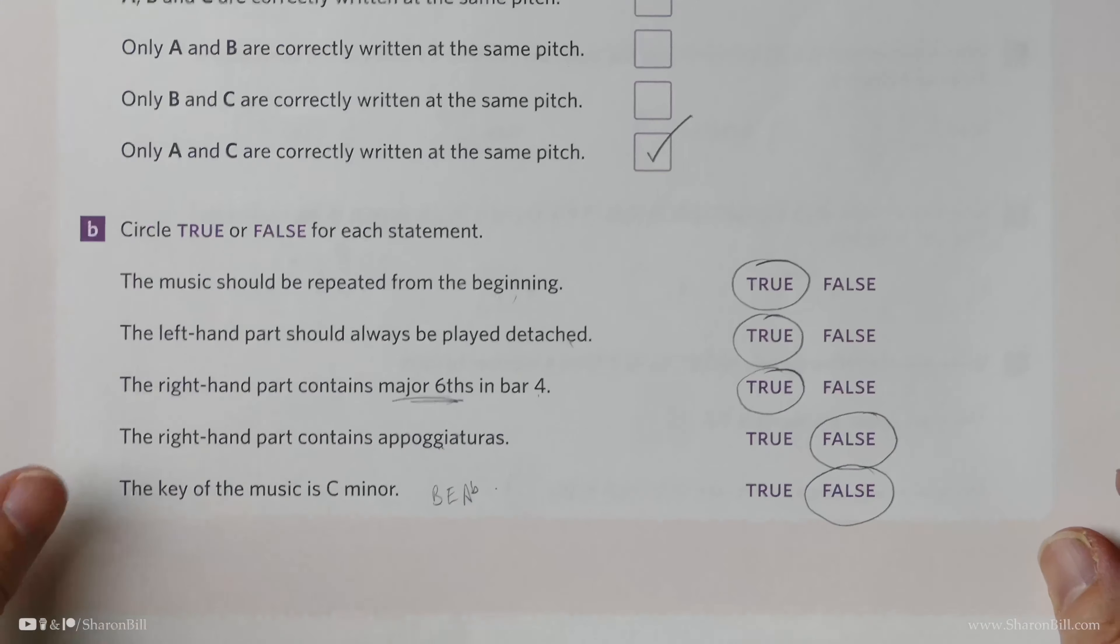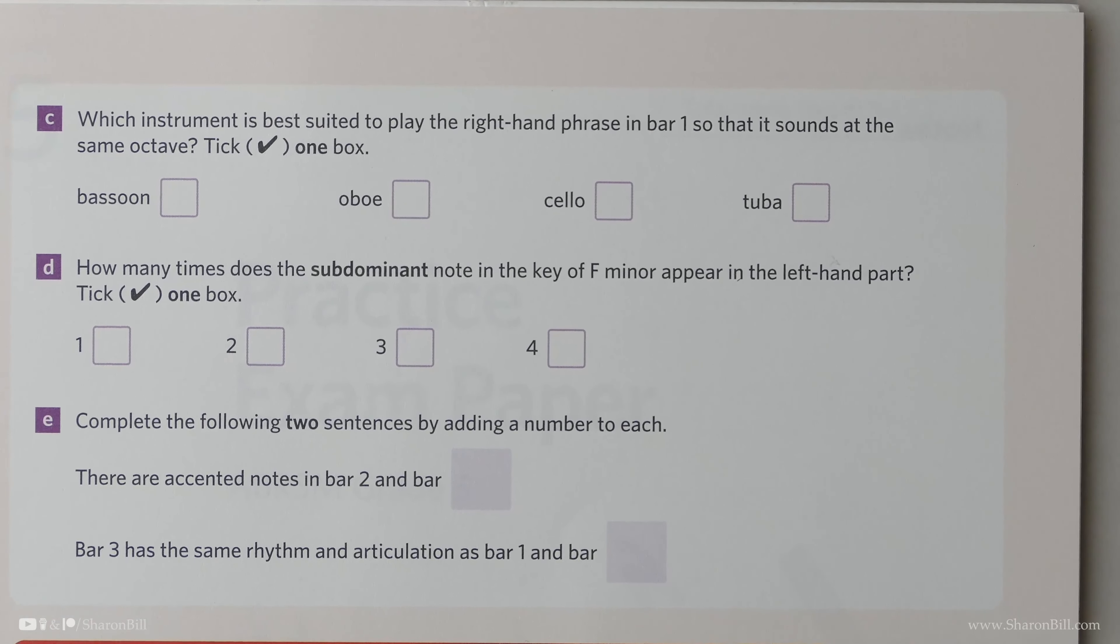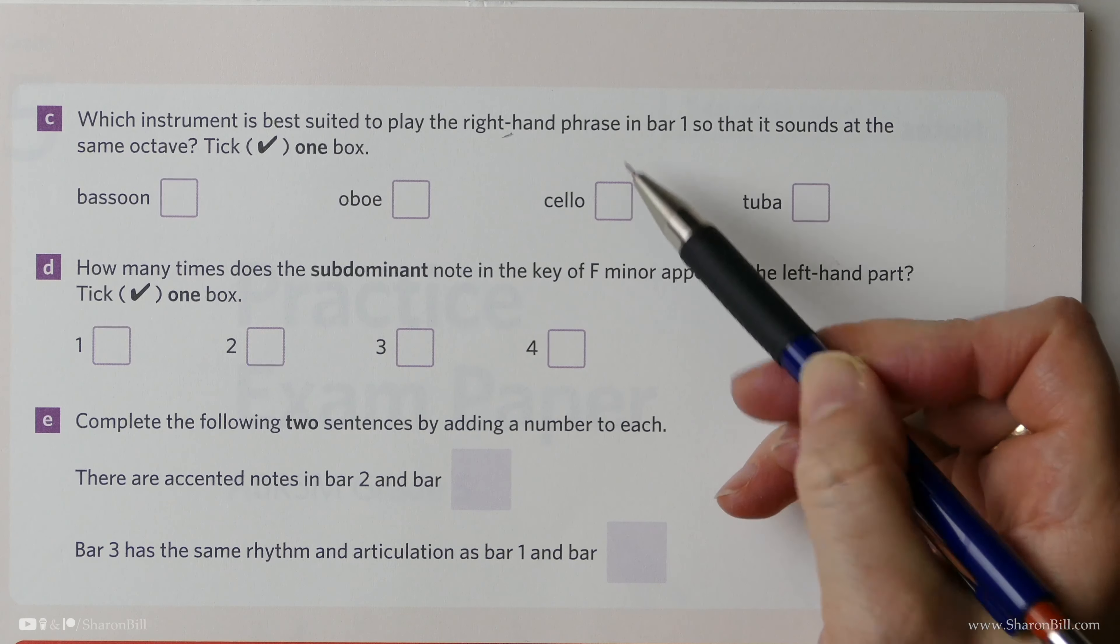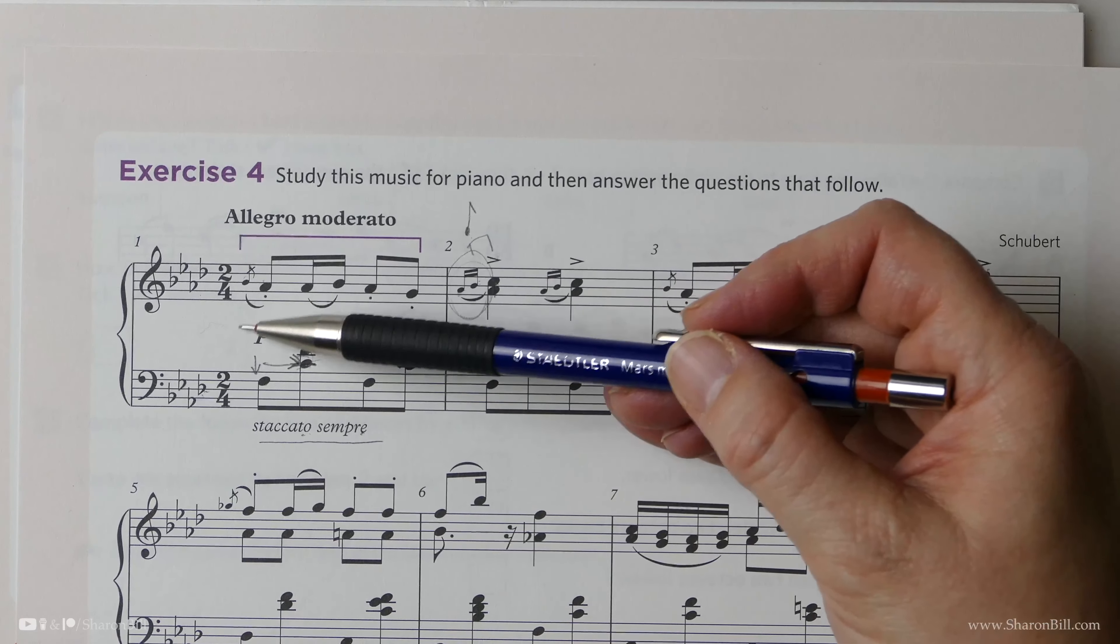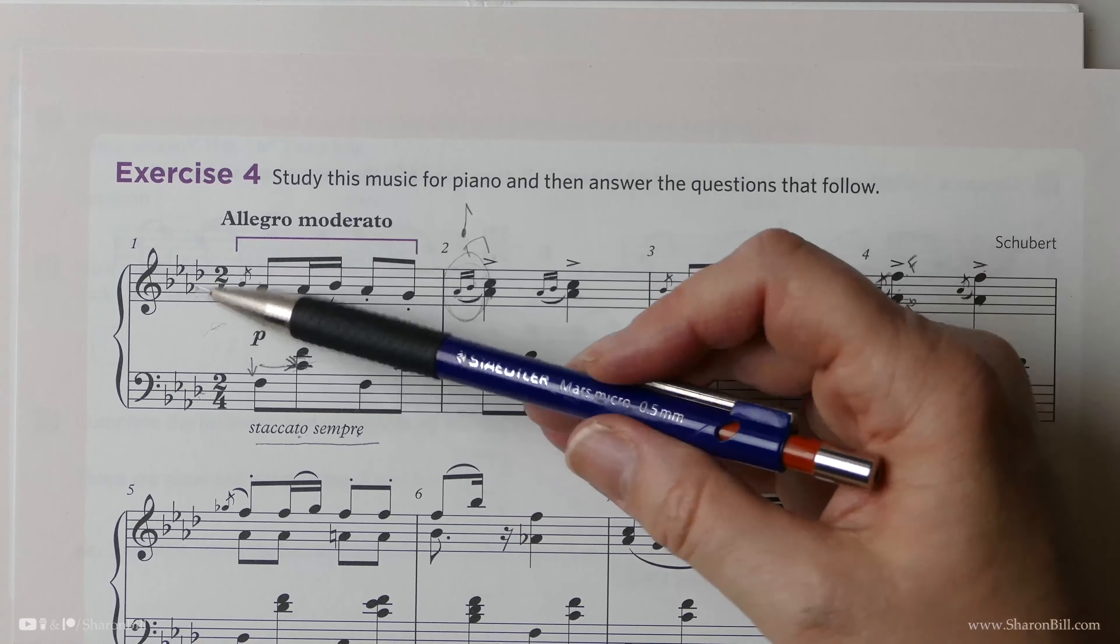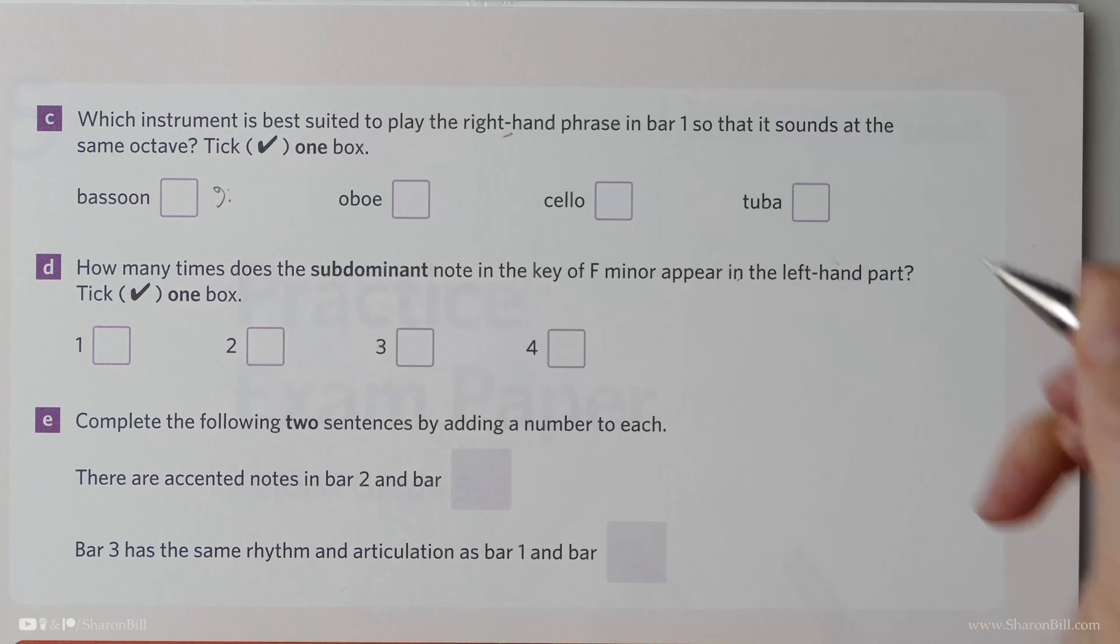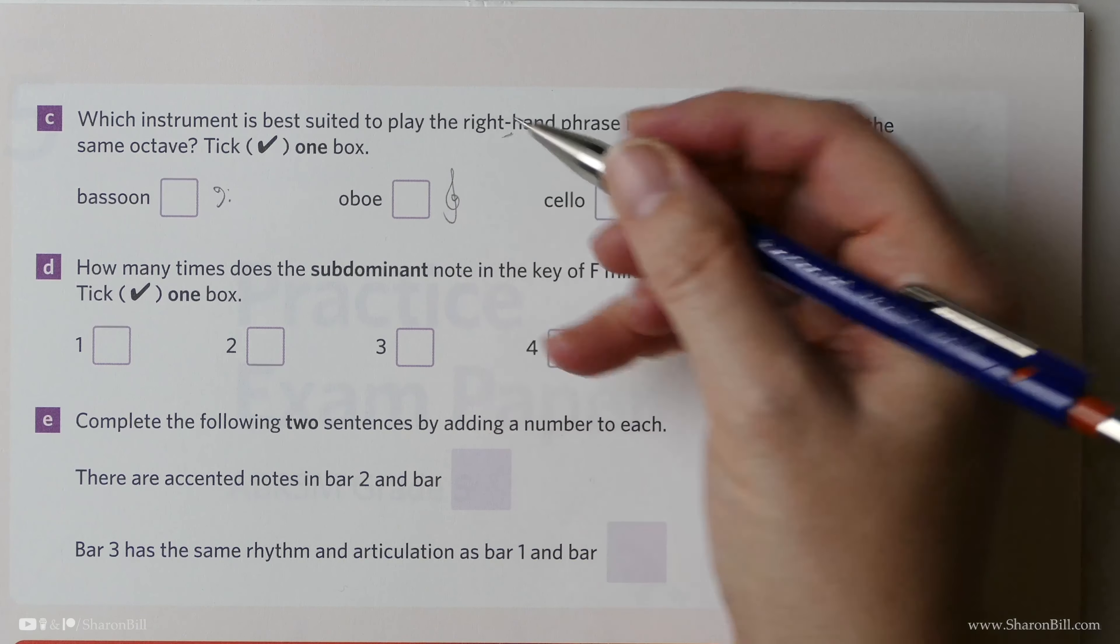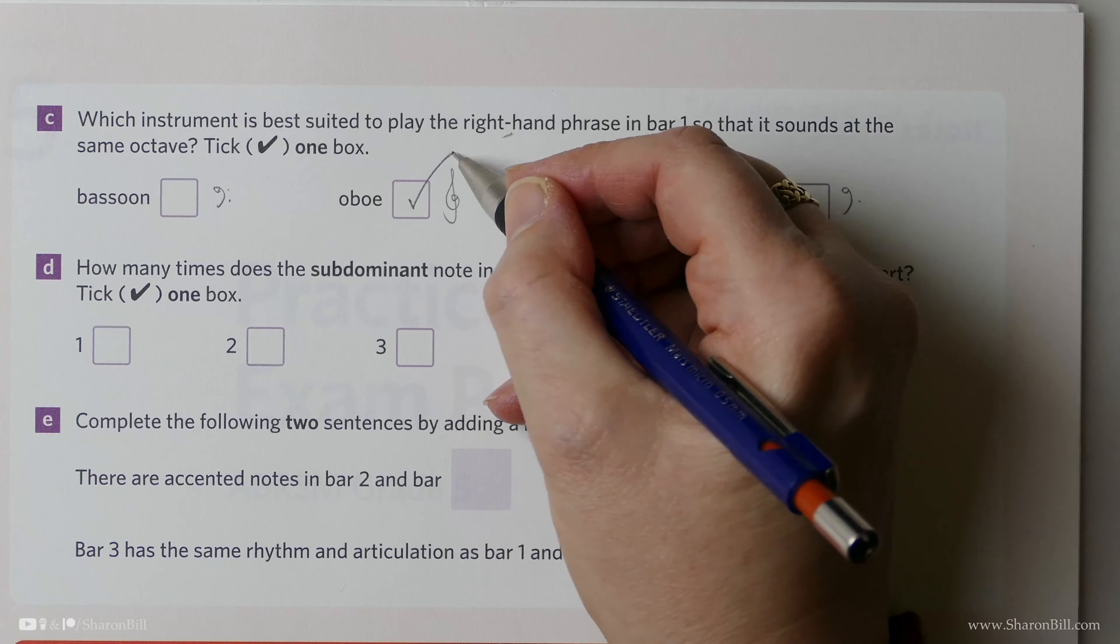Let's continue over the page. Which instrument is best suited to play the right hand of bar one in the same octave, the same pitch? The right hand is in the treble clef, not especially low. The bassoon would not be appropriate because that's a bass instrument. The oboe would be appropriate because that's a treble clef instrument. It would have to be oboe.